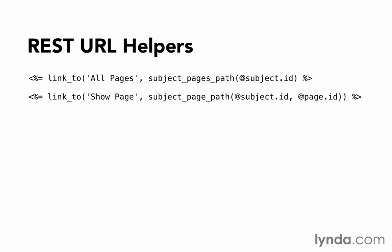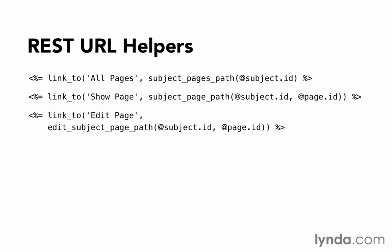You can see the pattern and see how it's actually not that dissimilar from what we're used to. Then if we wanted to edit a page, we would just put edit in front of subject_page_path. It's the same as the show page — it's just got edit prepended in front of it. The key point here is we need to keep track of both the subject and the page when they're nested.